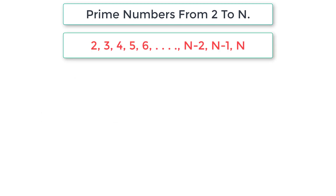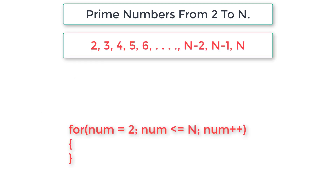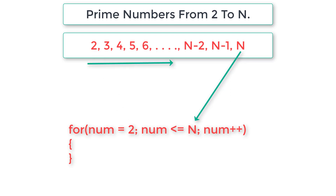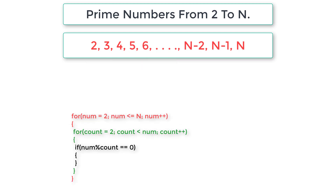Assume that we have 2 to n numbers, n being the user-entered number, and we will write an outer for loop for that. We initialize num to 2 and iterate this for loop until num is less than or equal to n. That means the outer for loop fetches numbers 2 to n one by one for each iteration.